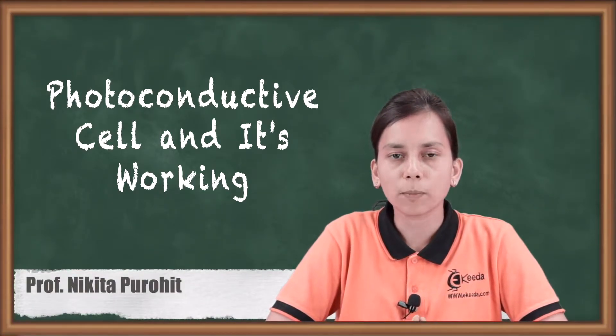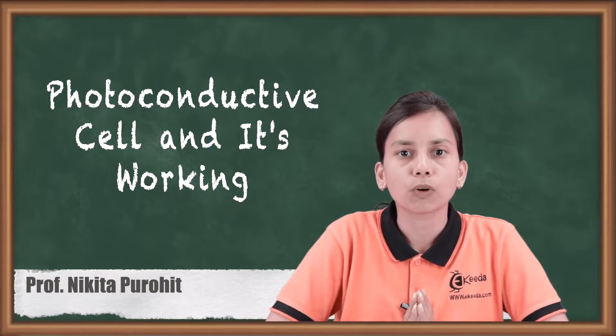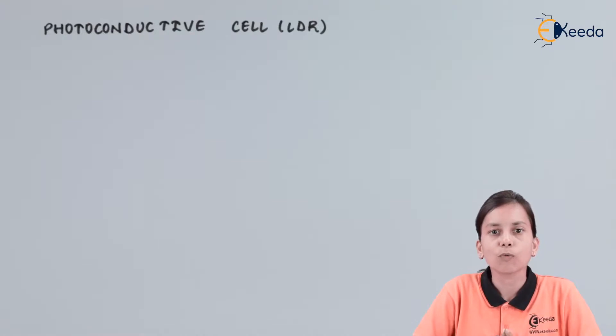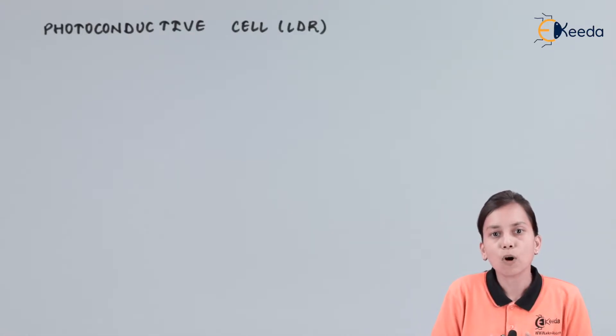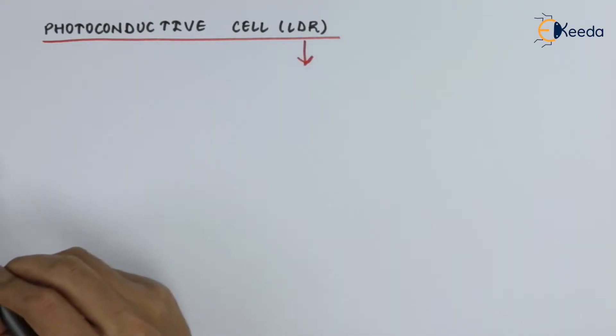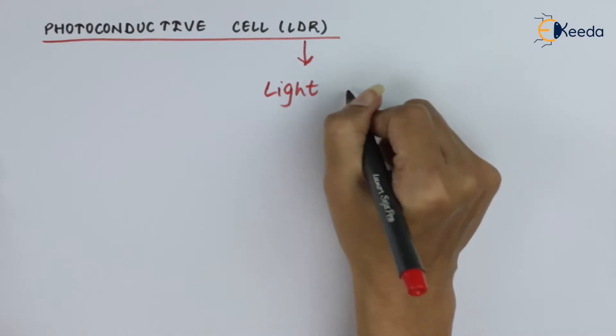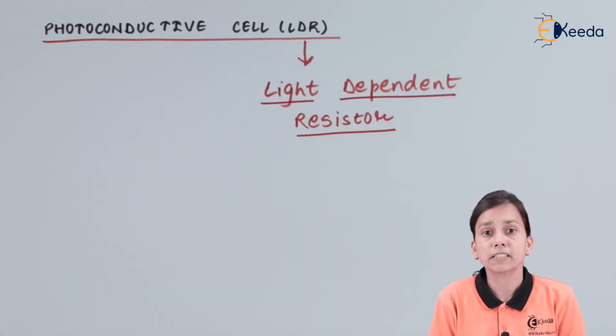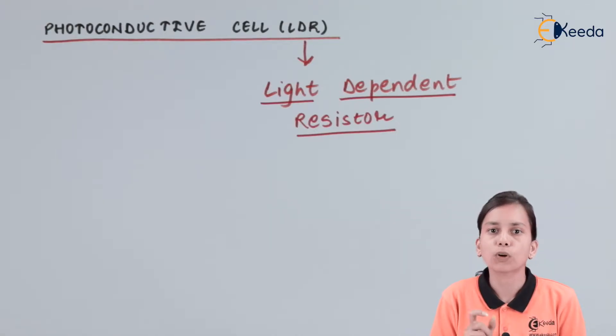Hello friends. In this video we are going to talk about photoconductive cell and how the photoconductive cell works. We are going to talk about one type of transducer which is known as photoconductive cell, also known by another name: LDR. This LDR stands for Light Dependent Resistor. The name itself, Light Dependent Resistor, is enough to explain the working of a photoconductive cell.